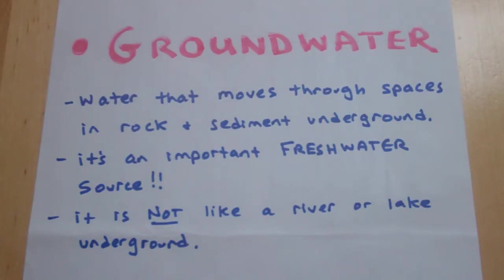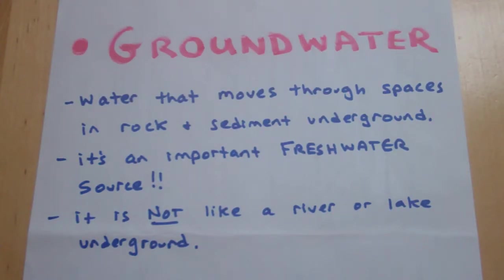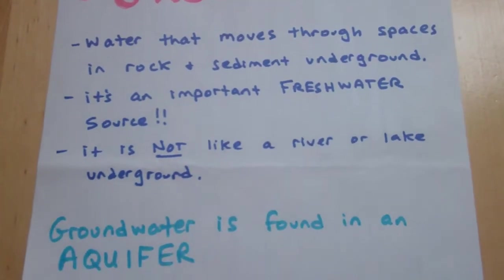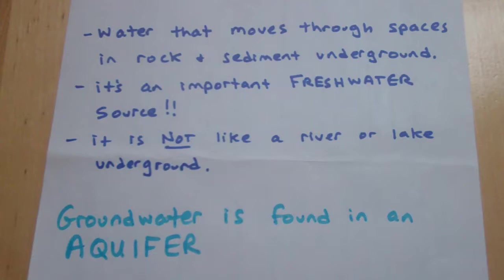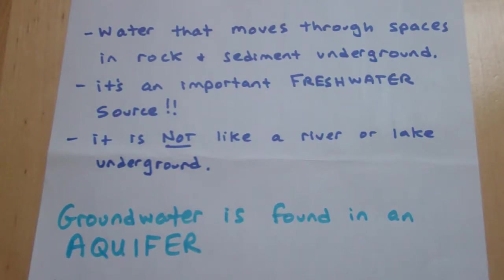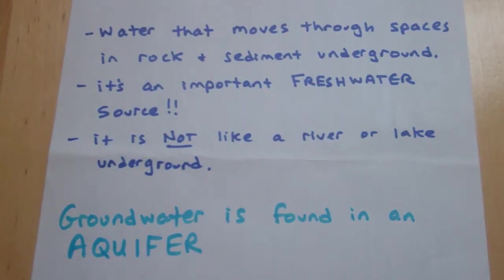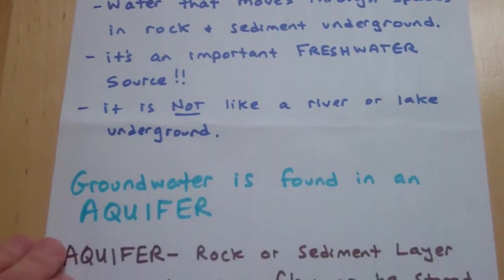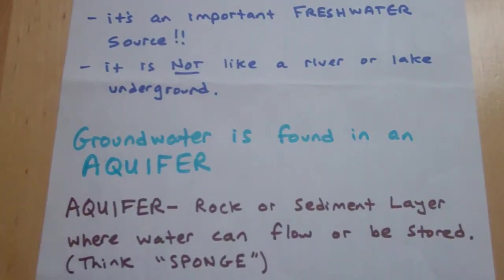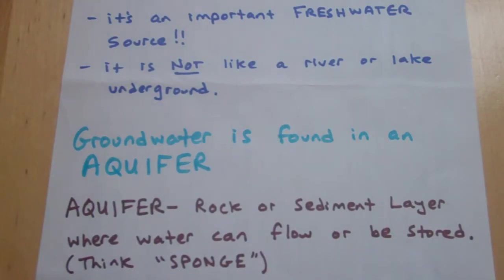Groundwater is defined as water that moves through the spaces in the rock and sediment underground. It's an important freshwater source and it is not like a river or a lake underground. The water is actually in a layer of rock that we call an aquifer, which is kind of like a sponge.